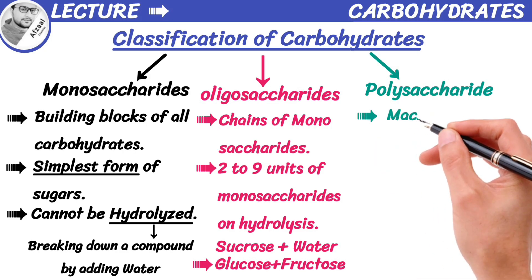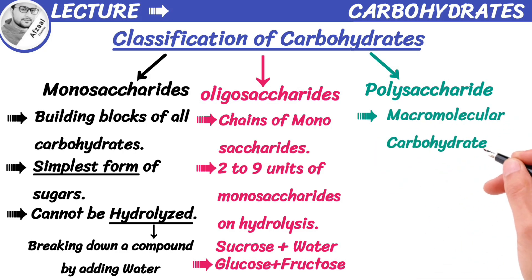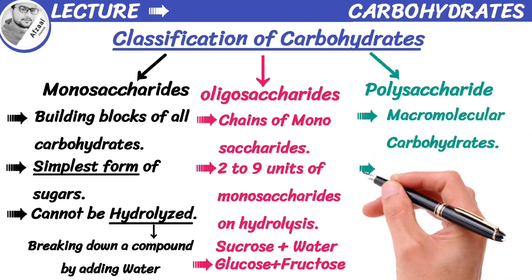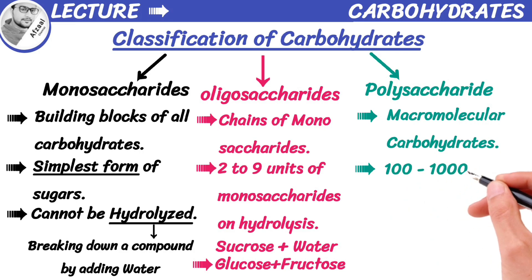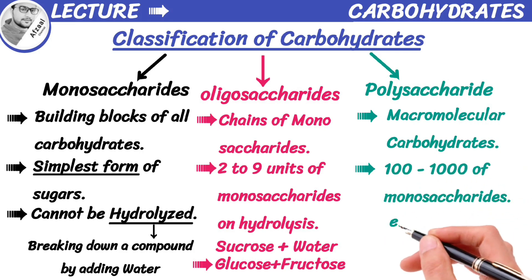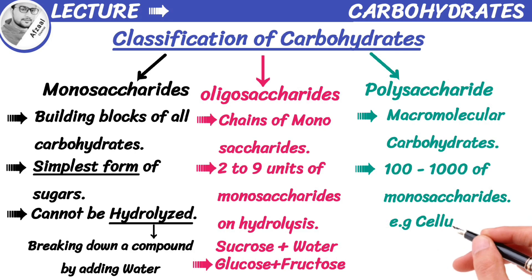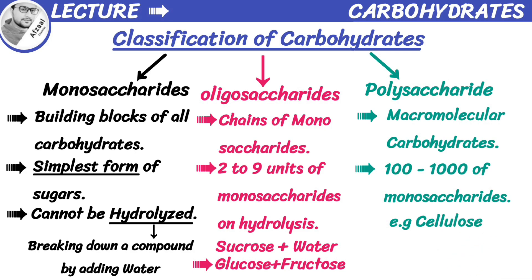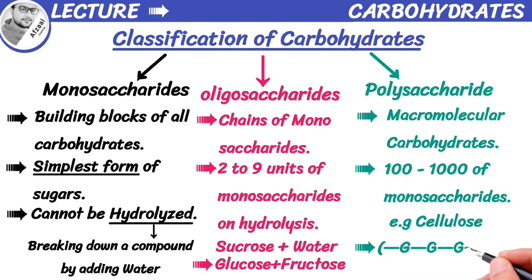Polysaccharides are macromolecular carbohydrates consisting of hundreds to thousands of monosaccharides. One common example is cellulose, a complex carbohydrate found in the cell walls of plants. It is made up of thousands of glucose monomers linked together in a linear chain, providing structural support for plants.